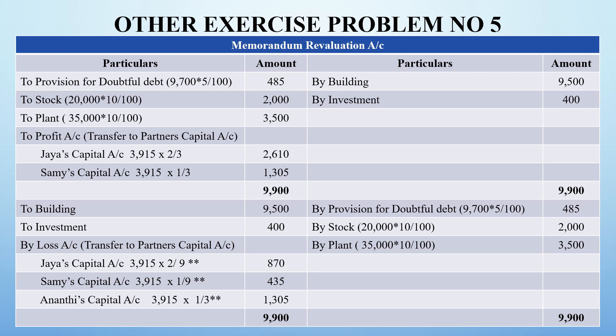The building account was to be appreciated by 9,500 rupees, so building increases by 9,500 rupees, which goes to the credit side. Next, investment worth 400 rupees not mentioned in the balance sheet were taken into account. Since this is an asset that was missing from the balance sheet, the asset value has increased, so it goes to the credit side. Totalling both sides, we get a balancing figure of 3,915 rupees.